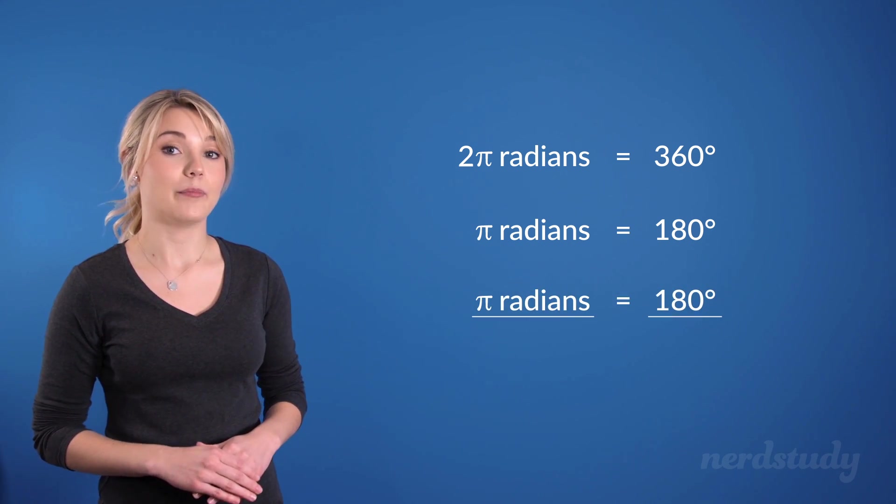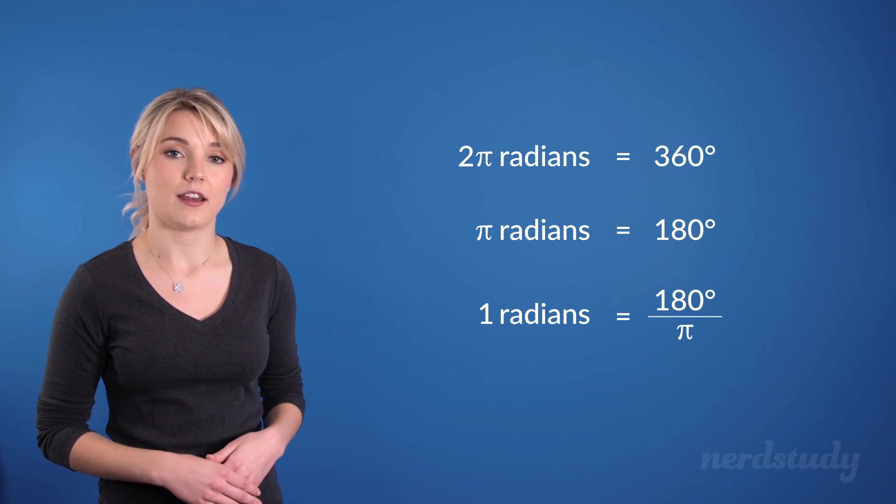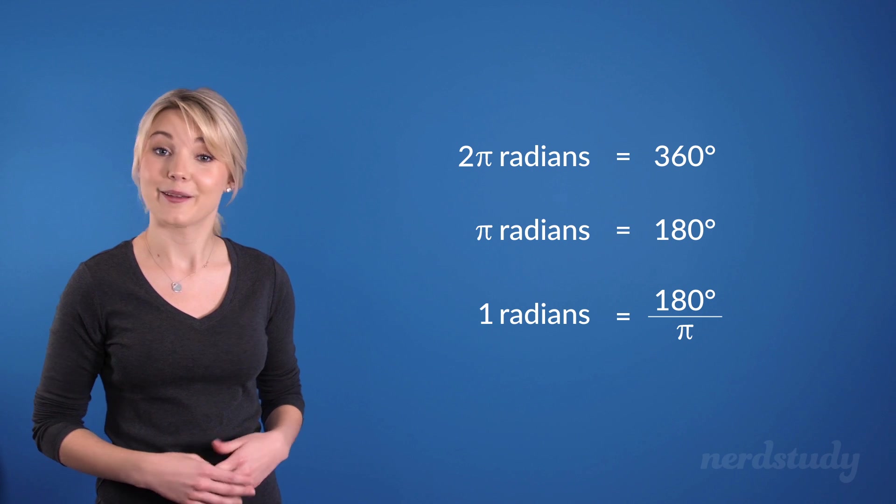Furthermore, if we divide both sides by pi, we'd find out that the value of 1 radian is equal to 180 over pi degrees. Pretty cool, right?